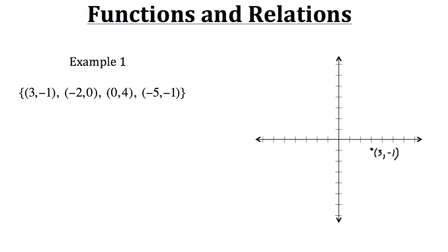Now let's plot (-2, 0). We'll start with the input, so we'll go negative two along the horizontal axis, and then zero — well, zero means we wouldn't be moving anywhere on the vertical axis, so we stay right here. That is our ordered pair (-2, 0) from this relation.